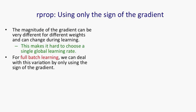RProp is an interesting way of trying to deal with the fact that gradients vary widely in their magnitudes. Some gradients can be tiny and others can be huge, and that makes it hard to choose a single global learning rate. If we're doing full batch learning, we can cope with this big variation in gradients by just using the sign of the gradient, which makes all of the weight updates be the same size.